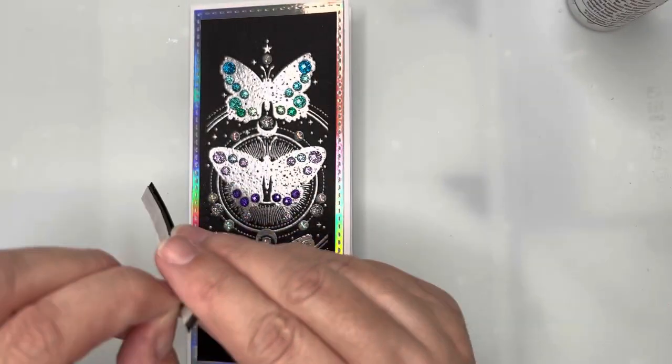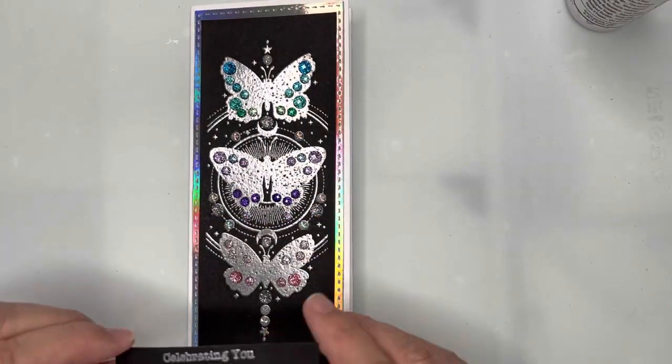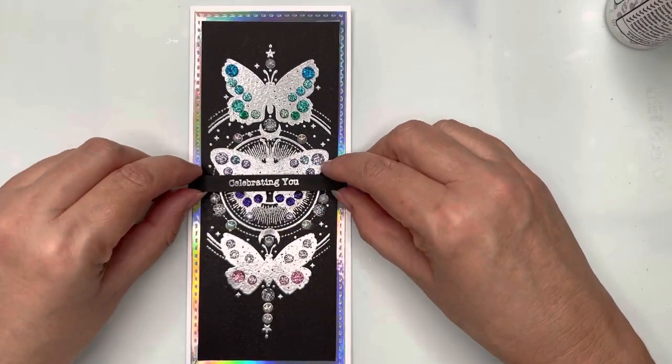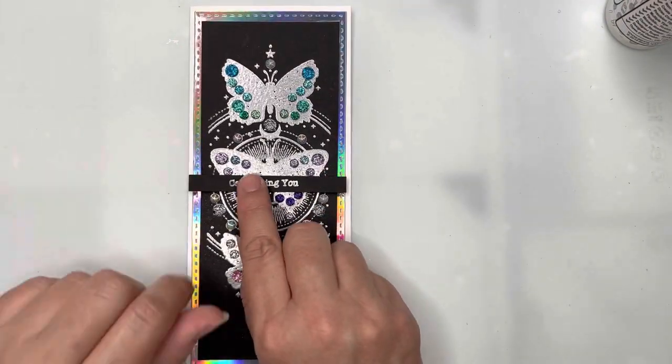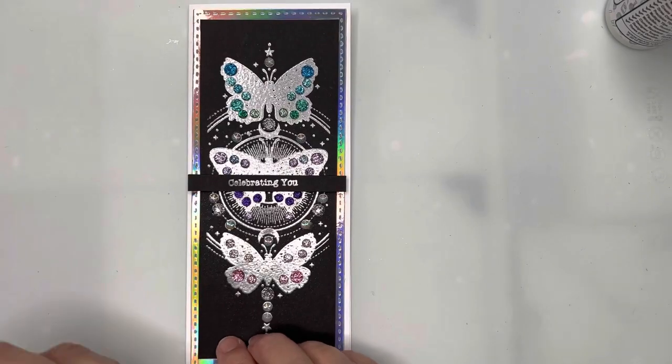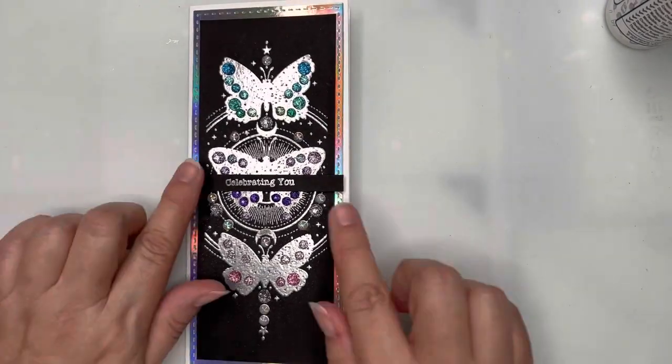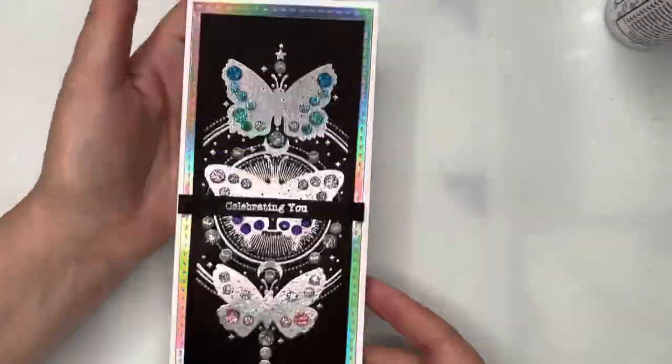Then I can go ahead and foam out my sentiment which says celebrating you. I'll add a little bit of glue just to make sure we stick nice and firmly to the embossing powder. Then I'll just touch up any little spots of glue and my card's finished. I think it's really pretty.